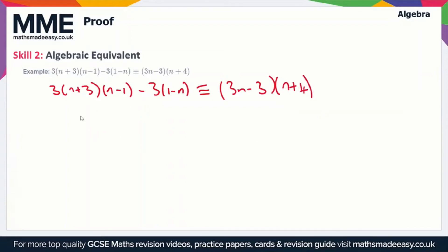So we'll start by expanding some brackets here but we'll ignore the 3 on the outside first of all. So we're going to use the FOIL method to expand this set of double brackets first of all which is going to give us n squared and then minus n. So that's n times n and n times minus 1. Then we do 3 times n which gives us plus 3n and 3 times minus 1 which gives us minus 3.